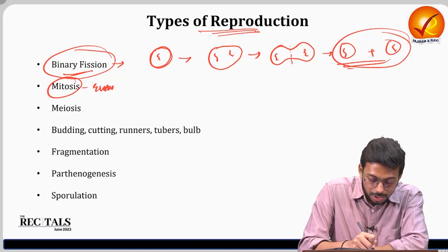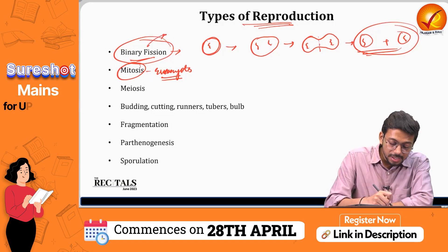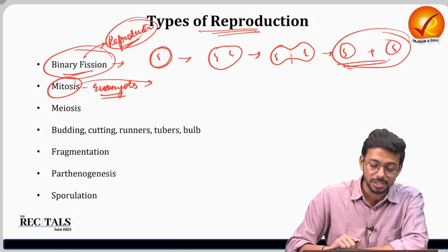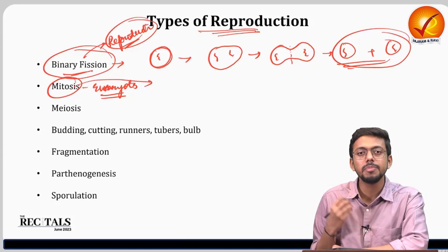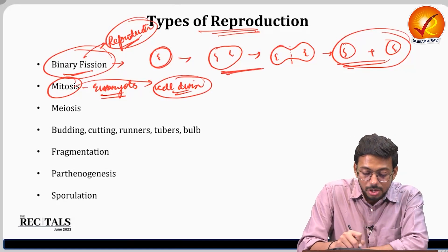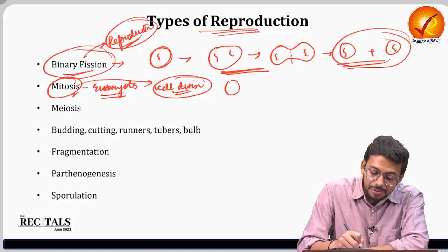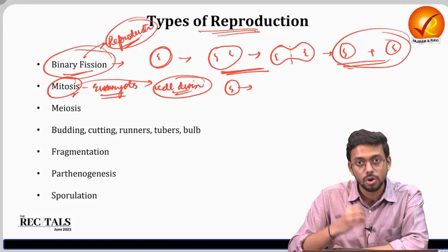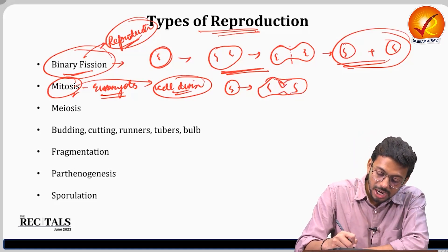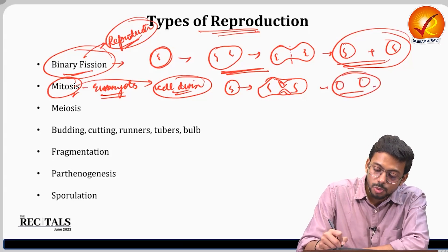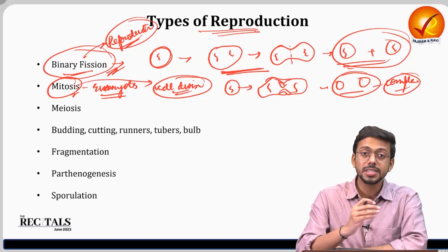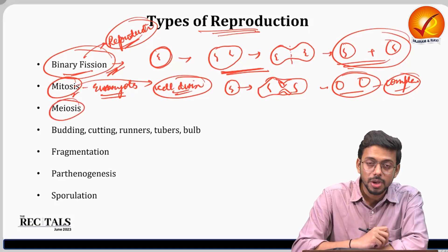Mitosis is found in eukaryotes. It is not strictly a reproductive process — it occurs when an animal or plant is growing, requiring cell division to make more cells. Similar to binary fission, the DNA is copied, moves to opposite sides, and cytokinesis splits the cell into two. However, mitosis is a much more complex process with multiple phases compared to binary fission.